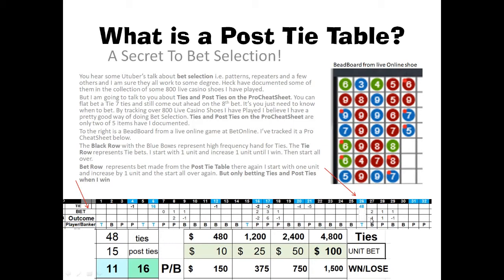As for the number of units, you can either do a progression up — one, two, three, four, five, six — or on your cheat sheet it will tell you the number of units you should be betting for each one of those hands. It's that easy. So if we go down here, we see there were 48 units that we won in ties.